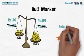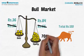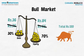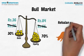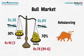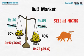The total investment value becomes Rs.120, and we see that the allocation to equity has increased to 70% and debt reduced to 30%. The fund is rebalanced and brought back to 65% equity and 35% debt. Profits are booked in equity and the proceeds are invested in debt to rebalance.